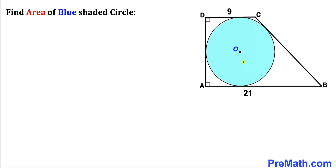Welcome to PreMath. In this video we have a blue shaded circle completely inscribed by trapezoid ABCD, such that side lengths AB and CD are parallel to each other. Side length AB is 21 units whereas side length CD is 9 units, and now we are going to calculate the area of this blue shaded circle.